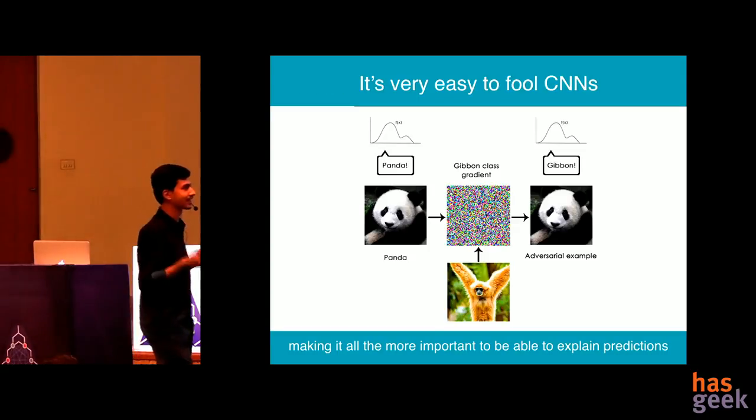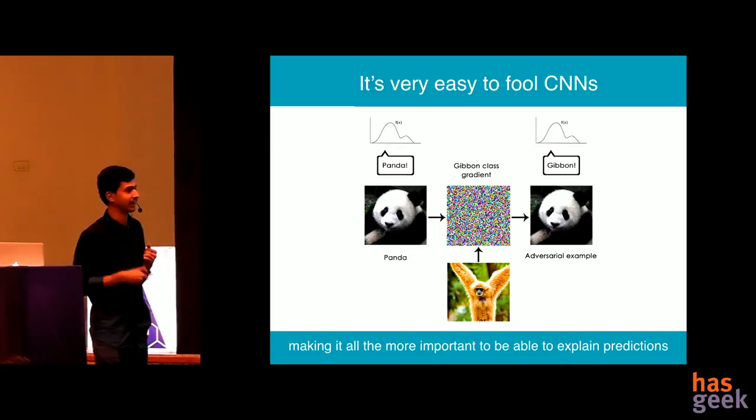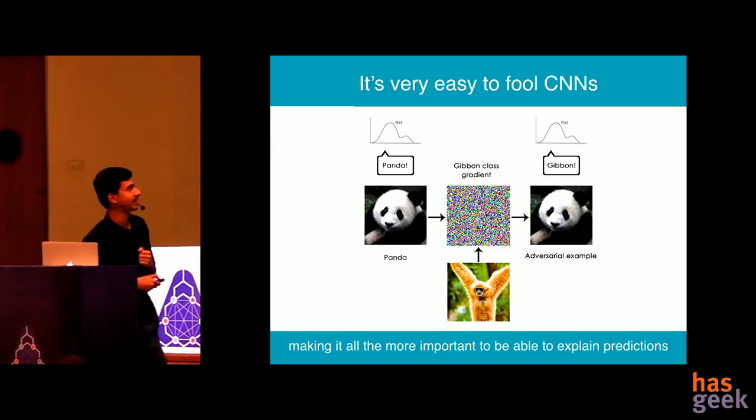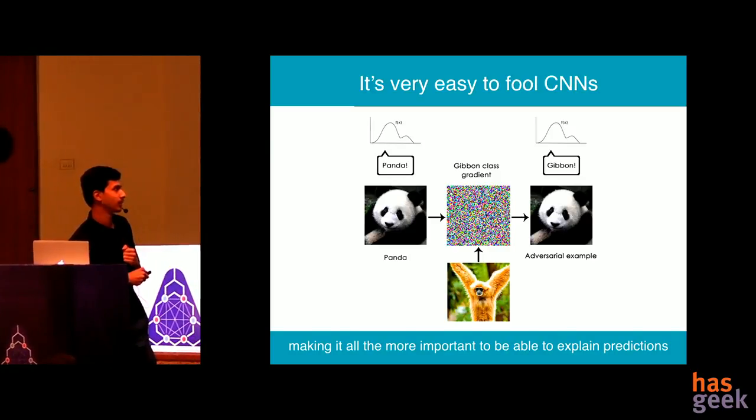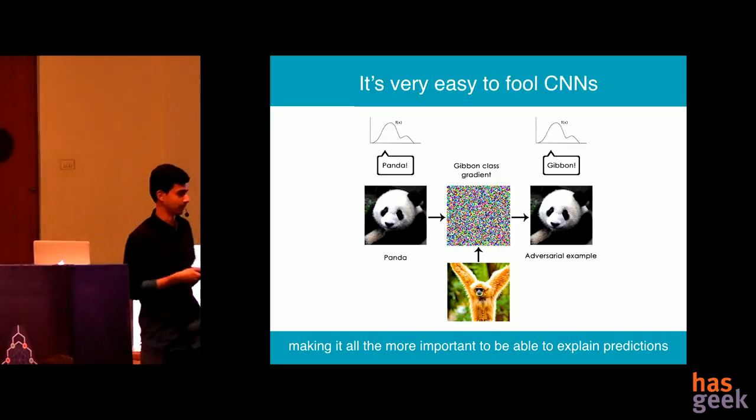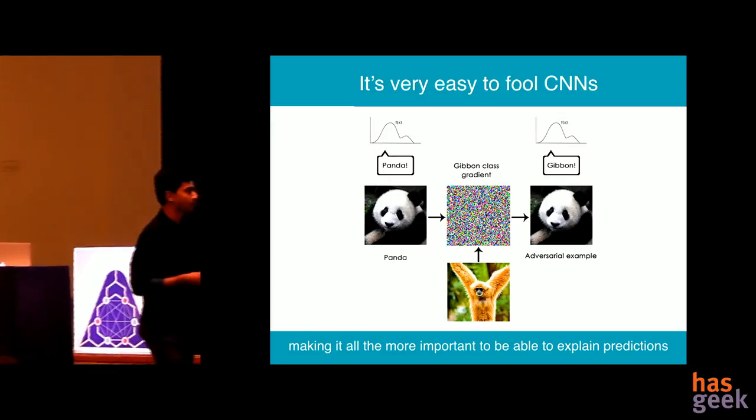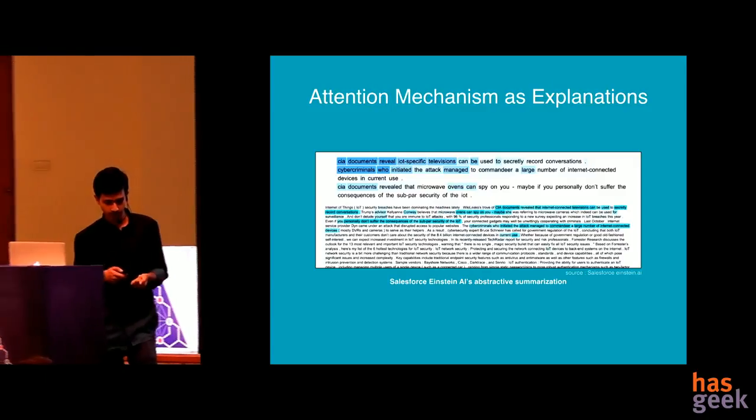Now this is the same slide that the previous speaker showed. Again, it's very easy to fool CNNs. You just add the gradient to the previous image to get an adversarial example. The gradient of a gibbon is added here and it's predicting it as a gibbon. This actually makes it all the more important to be able to explain predictions.